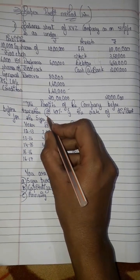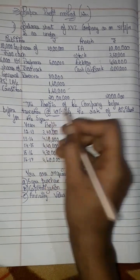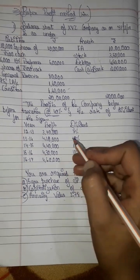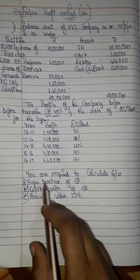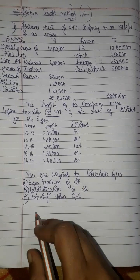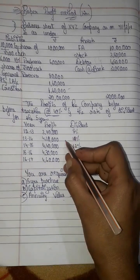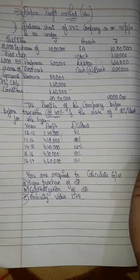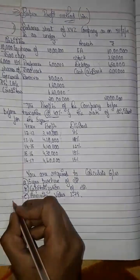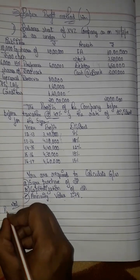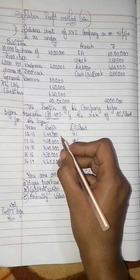We have to calculate the profits before tax, then deduct dividends. First we calculate goodwill, and we have an additional income of Rs. 3,50,000. Now let's take a look at the profit before taxation for 5 years.